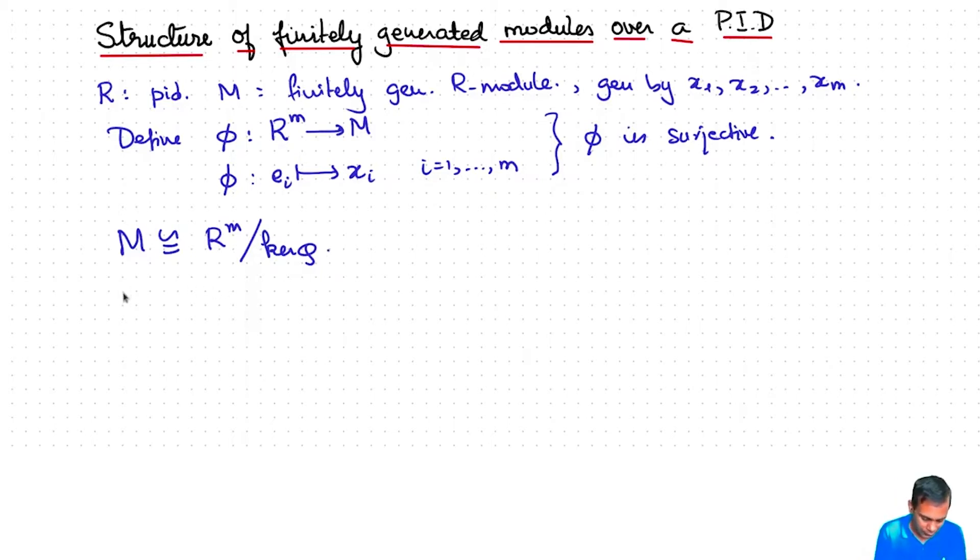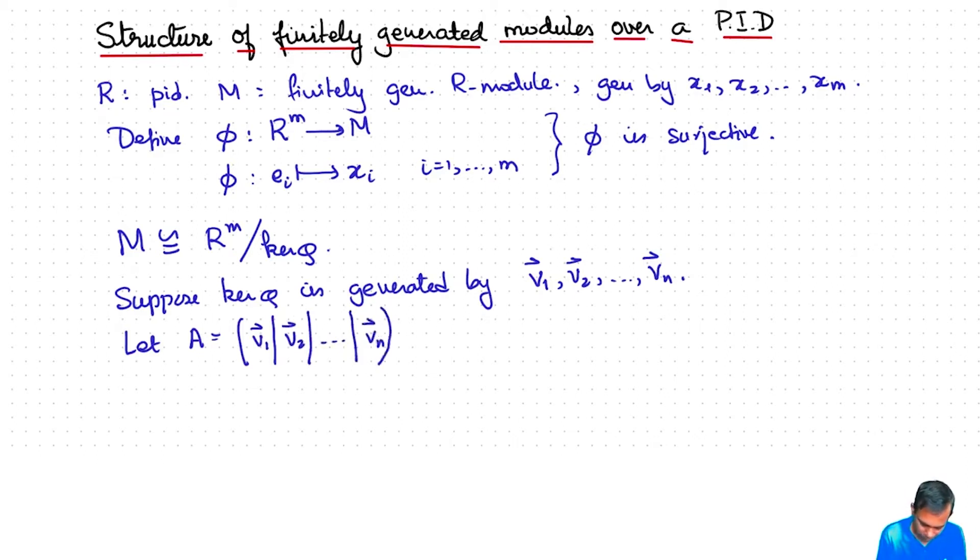So let's say kernel φ is generated by vectors, let's call them d1, d2, up to dn. These are vectors in R to the m. I'm going to think of them as columns, so then you form the matrix with columns d1, d2, up to dn. This matrix has m rows and n columns, and what we are saying is that kernel φ is the column space.